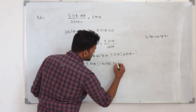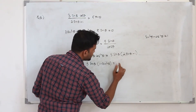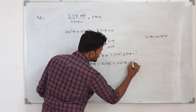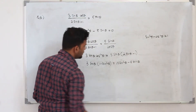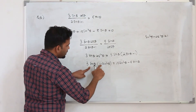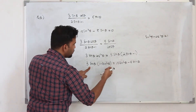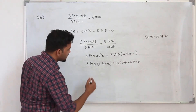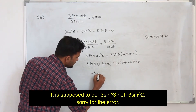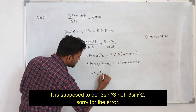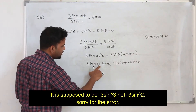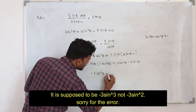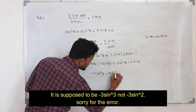When you multiply through, you get 3 sin θ into (1 − sin²θ). Expanding: 3 sin θ · (−sin²θ) gives −3 sin³θ. Bringing everything to one side and simplifying, you get −3 sin³θ − 10 sin²θ + 8 sin θ = 0.